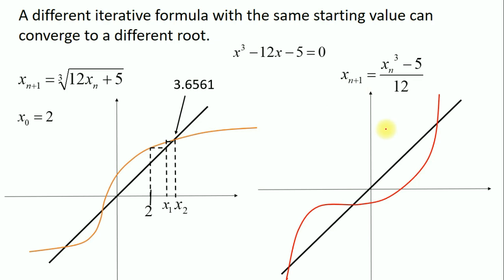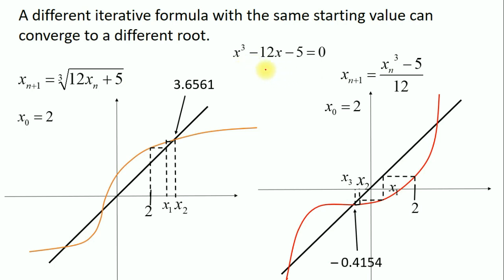Now on this side, we use the same initial value x₀ = 2, but with the second iterative formula. As you see in the visual, starting from 2, substituting into the formula leads you to a different root: negative 0.4154. So using a different iterative formula with the same initial approximation can converge to a different root.